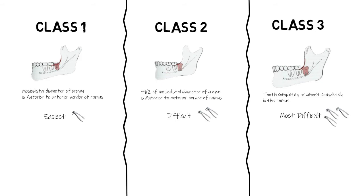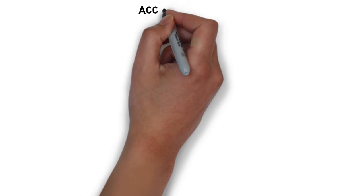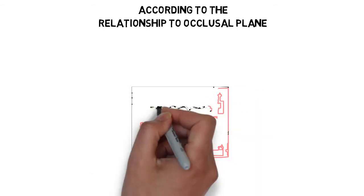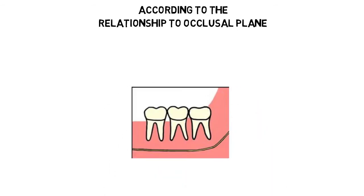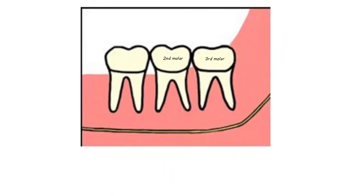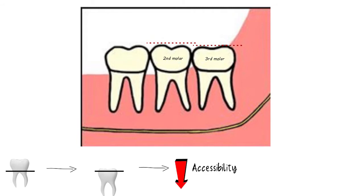The next classification, also proposed by Pell and Gregory, is the Class A, B, and C classification, based on the relationship of the impacted tooth to the occlusal plane. It is explained on the basis of the depth of the impacted third molar compared with the height of the occlusal plane of the adjacent second molar. The degree of difficulty increases as the depth increases, since the tooth becomes less accessible as it goes deeper into the bone.